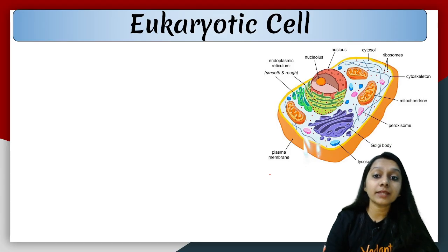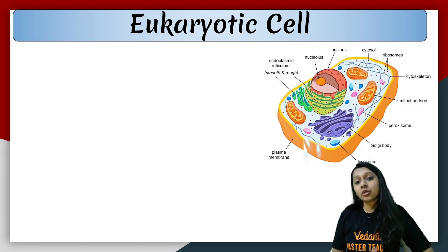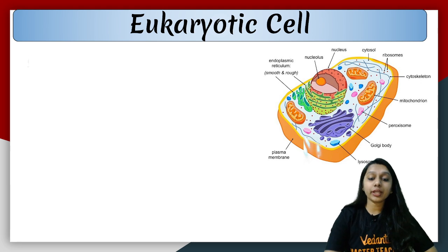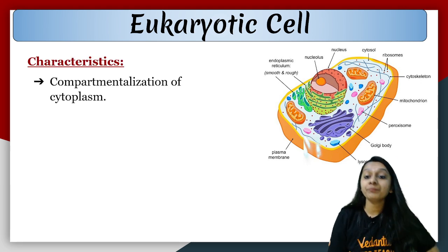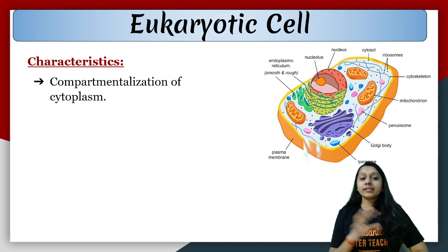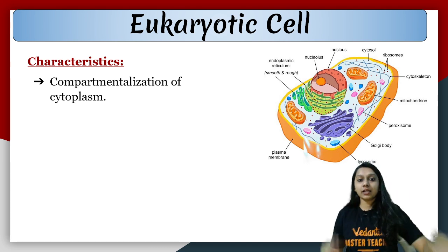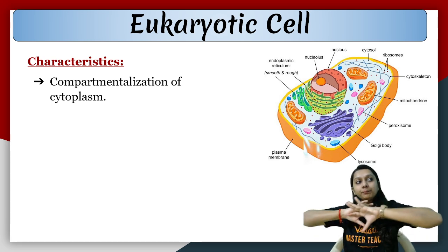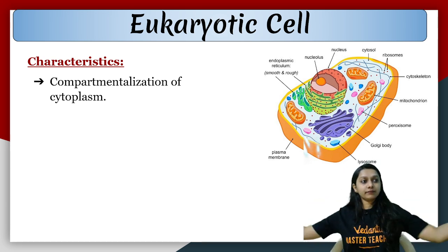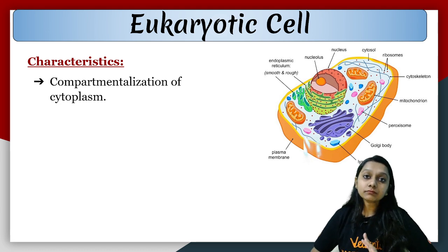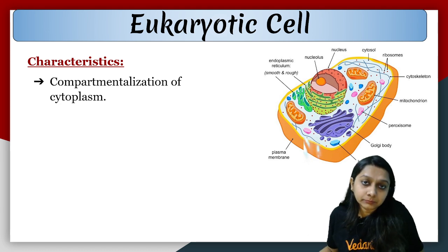Let's move on to eukaryotic cell characteristics. Eukaryotic cells have some characteristic features. One important feature is compartmentalization of cytoplasm. As simple as: imagine a plot with only 4 walls and nothing else — that is a prokaryotic cell, where everything like a study table, gas stove, cylinder, utensils, and bed are all in one open space with no separation.